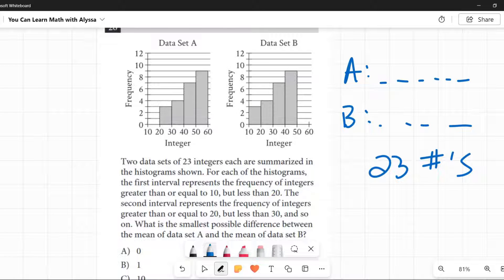And so the first interval, when they say the first interval, it means this first area here, represents the frequency of integers greater than or equal to 10 but less than 20. So right here, what they did is they looked at data set A and said, okay, I'm looking at all these 23 numbers. How many numbers are between 10 and 19? And they didn't find any, so they didn't put anything there.